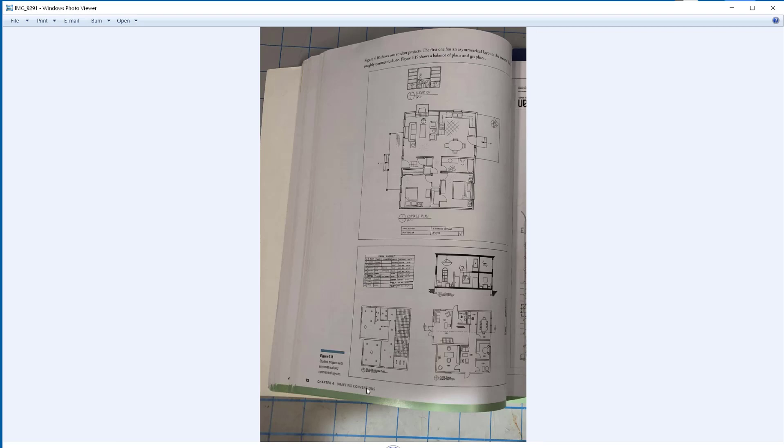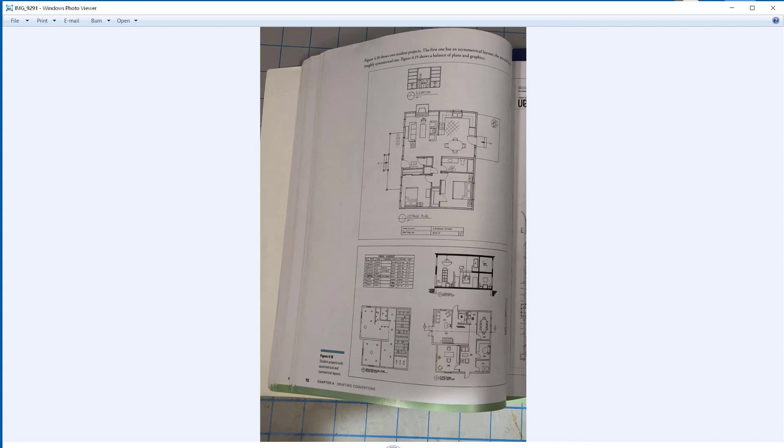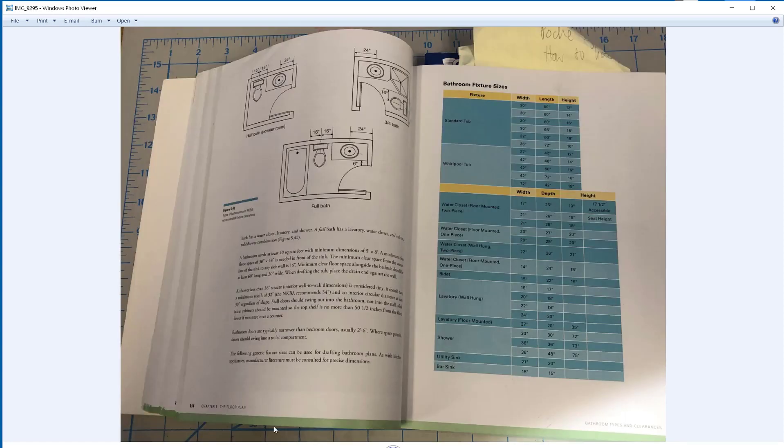You can see this example on page 72 in the book. And on page 114 are the pictures of the bathroom clearances. And we have a page here on bathroom sizes. So that is how you get started on a residential design project.